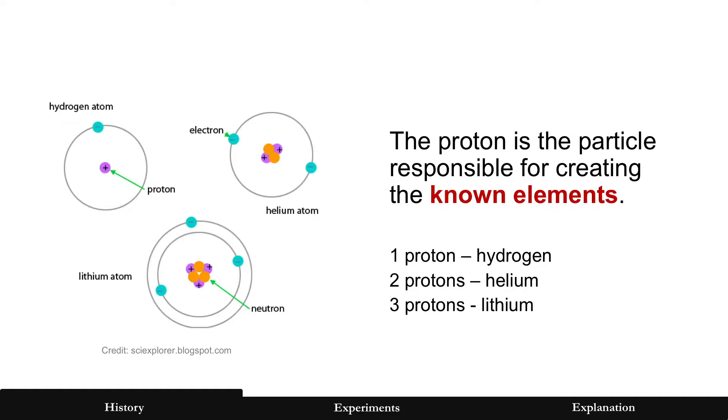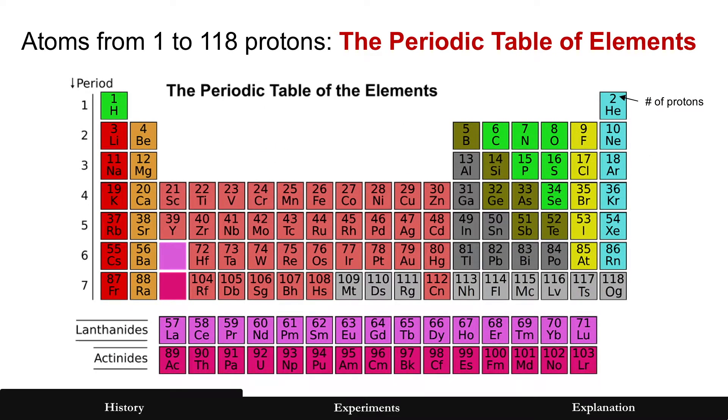And this is what it looks like: a proton and electron is a hydrogen atom, but if you add another proton for two separated by neutrons you have the helium atom. Three protons is lithium, and you keep adding protons until you get to 118 and you form all of the known elements and that's the periodic table of elements.